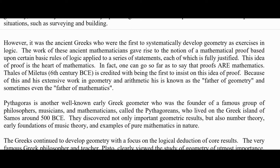Thales of Miletus, in that part of Greece around the 6th century BCE, is credited with being the first to insist on the idea of a rigorous proof. Because of this, and because of his extensive work in geometry and arithmetic, he is known as the father of geometry and sometimes even the father of mathematics. I've also seen Euclid listed as the father of geometry, but I think Thales more appropriately deserves that title.